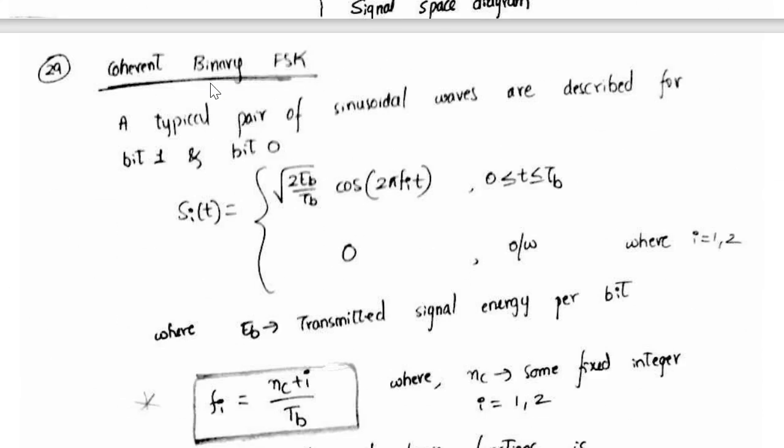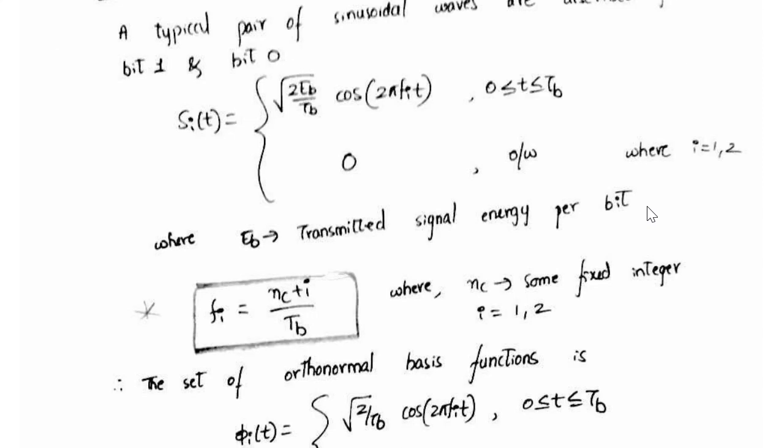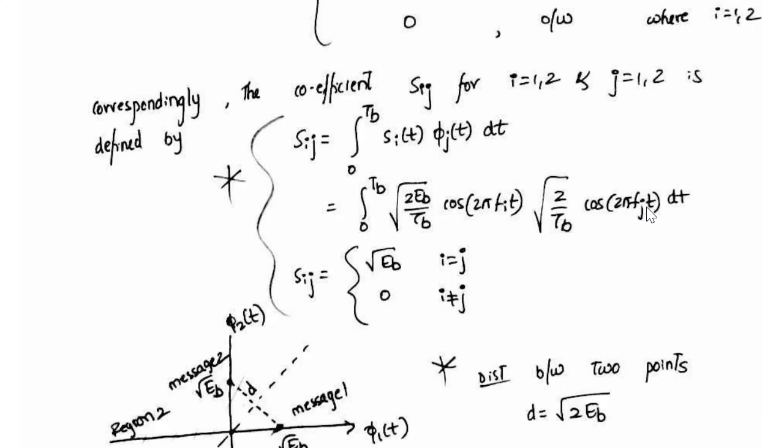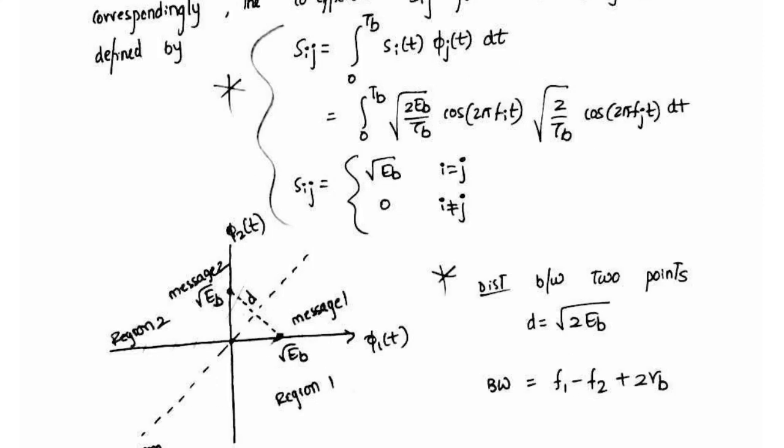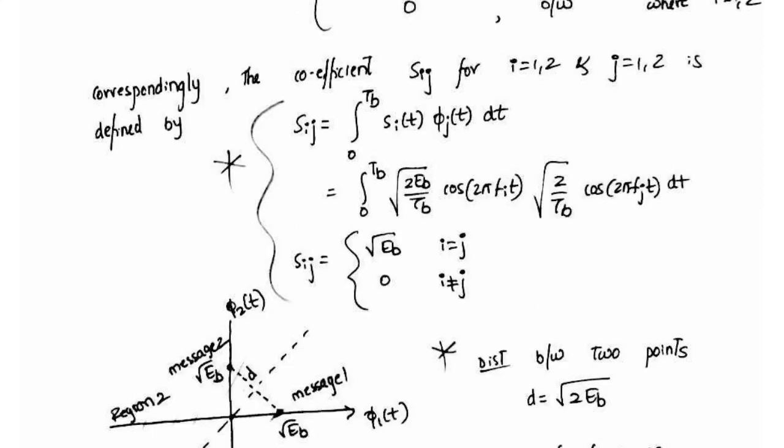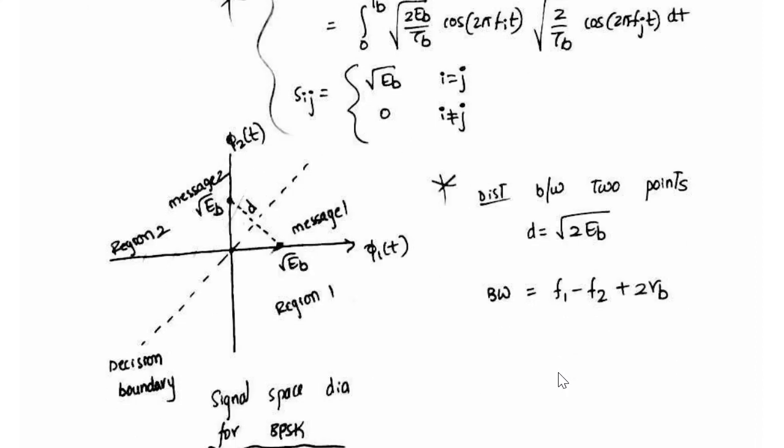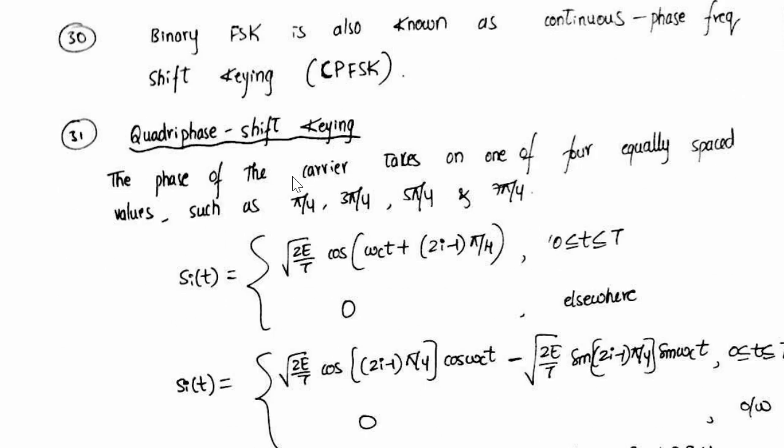Similarly for coherent binary FSK, and then comes quadrature phase shift keying.